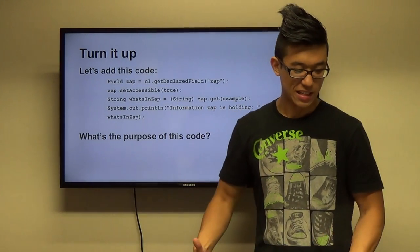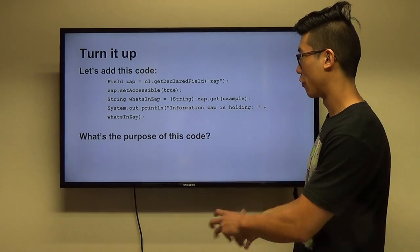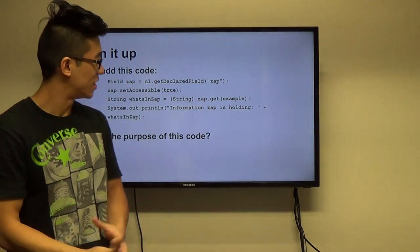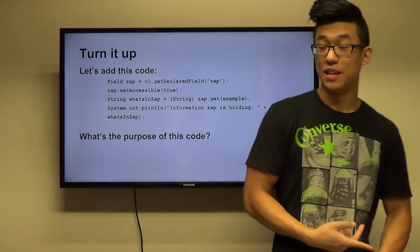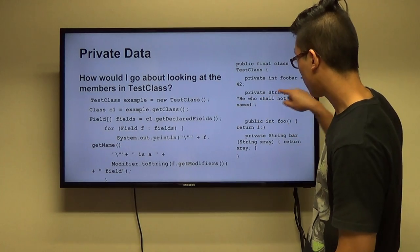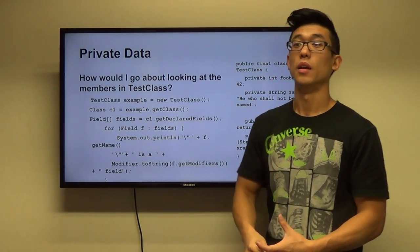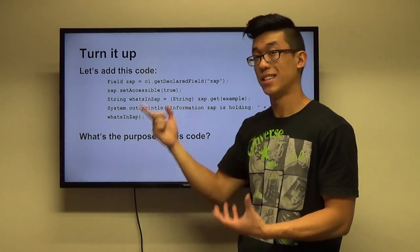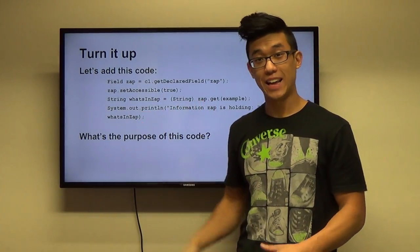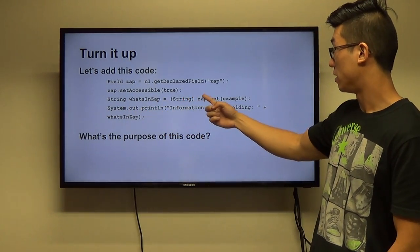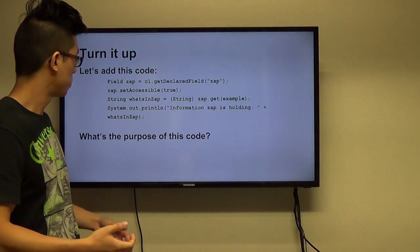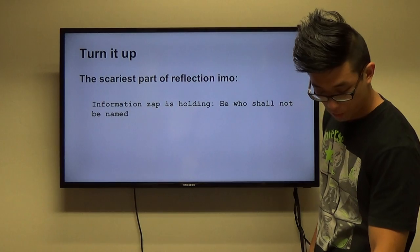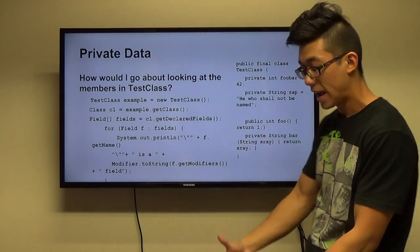Let's add code to see exactly what data the field is holding. The crux of getting the field's value is first getting the name of the field — the name is `zap`. You have to know the name beforehand or get it via reflection. The second critical step is setting it accessible: `field.setAccessible(true)`. Then I say `String whatIsInZap = (String) zap.get(example)` where `example` is my instance of the test class. Printing it out shows that zap is holding 'He Who Shall Not Be Named' — exactly what was set. Pretty scary and powerful.